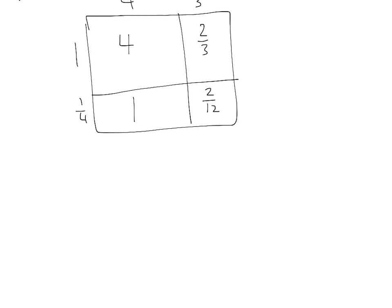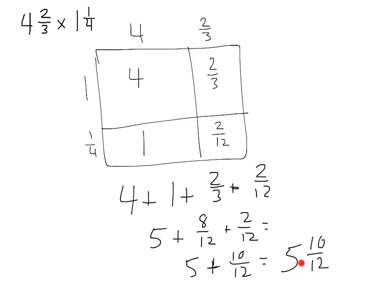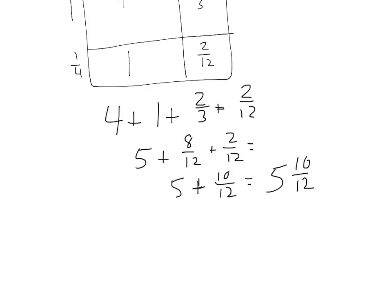Next, I can take this and I can add my parts. So I'm going to take 4 plus 1 plus 2 thirds plus 2 twelfths. I'm going to go 4 plus 1 is 5. Plus, I'm going to turn this into 8 twelfths plus 2 twelfths. Which gives me 5 plus 10 twelfths. So I have a total of 5 and 10 twelfths. Now, noticing that these are both even numbers, I can simplify further. So, I can simplify this to 5 and 5 sixths.